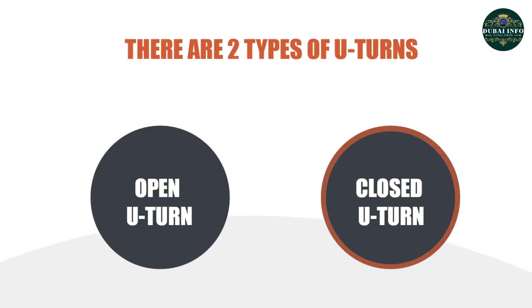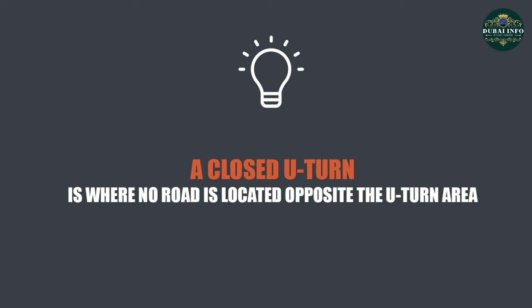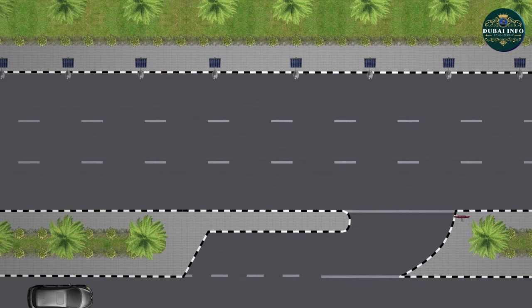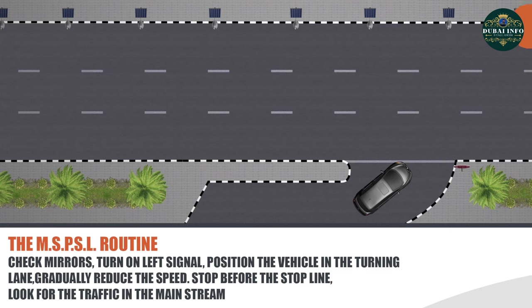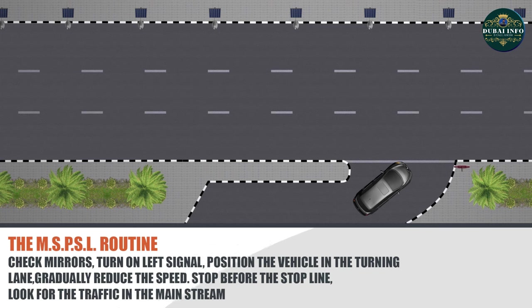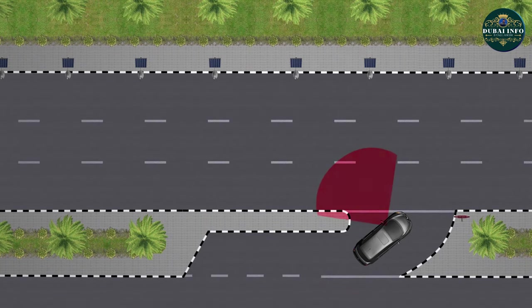Closed U-turn. A closed U-turn is where no road is located opposite the U-turn area. While approaching towards the closed U-turn, follow the MSPSL routine: check mirrors, turn on left signal, position the vehicle in the turning lane, gradually reduce the speed, stop in the centre before the stop line, look for the traffic in the main stream, and do a head check for possible hazards like two-wheelers on the left side before turning.